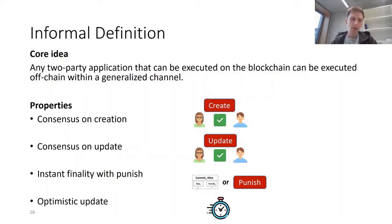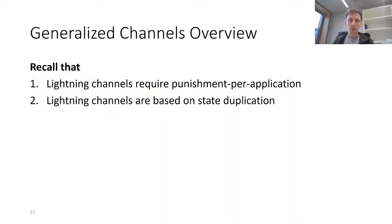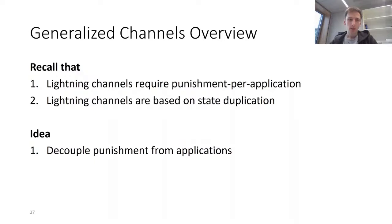Finally, we have an efficiency property called optimistic update: if both parties behave honestly during an update, the procedure terminates within a constant number of rounds. For our construction we address the two issues with Lightning channels—punishment per application and state duplication, since Lightning channels have two distinct commit transactions for each state.